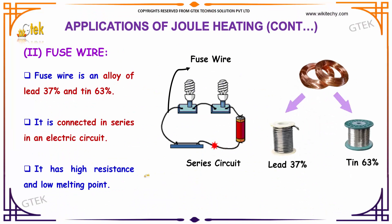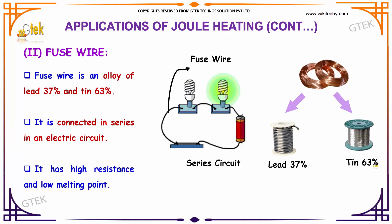Fuse wire is an alloy of lead and tin — about 37% lead and 63% tin — and it is connected in series in an electrical circuit. The reason for using it is that it has high resistance and a low melting point.